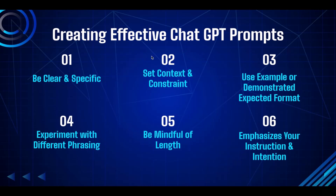The second aspect: set context and constraints. Provide relevant context or constraints in your prompts to guide the model's understanding. Specify any limitations, requirements, or boundaries to ensure the model generates responses within the desired scope or framework. If you want ChatGPT to be as creative and imaginative as possible, you shouldn't have too many constraints. But if you want the output to be very specific, make sure you add relevant context and constraints to your prompt.